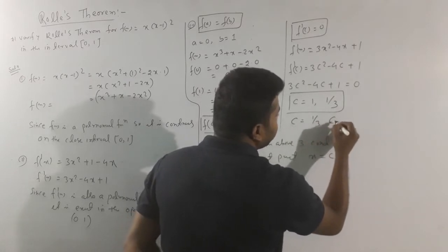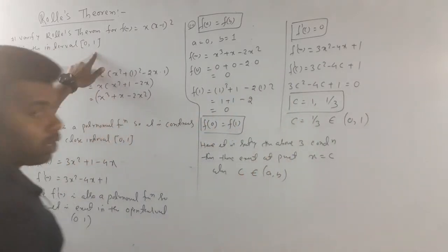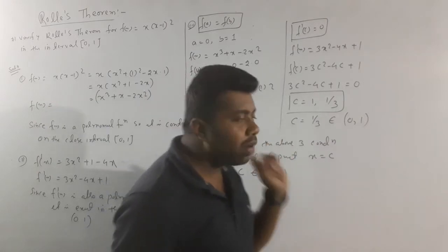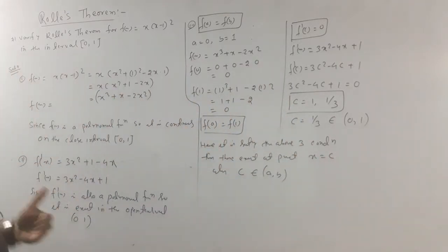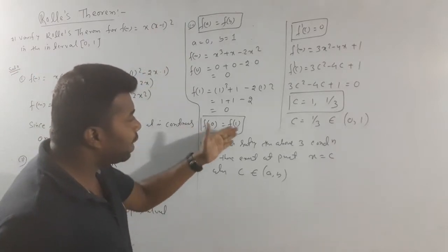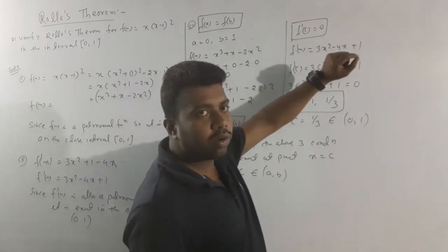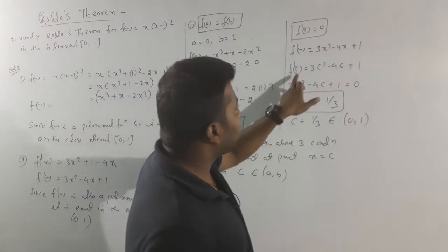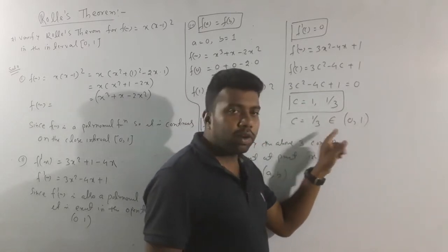We get c equals 1 and c equals 1/3. Since we are considering the open interval (0, 1), c equals 1 is a boundary value and is excluded. So c equals 1/3 belongs to (0, 1). Thus Rolle's theorem is verified. Step 1 is continuity, step 2 is differentiability, step 3 is f of a equal to f of b, and then we find the c value where f dash c equals zero.